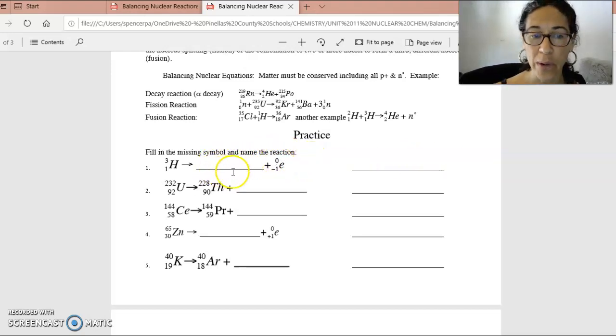Now, how do we figure out what the particle contains? It's that AXZ, three pieces that we need to fill in. So the top thing, the mass, is going to be determined from this mass, the starting mass of three, and the knowledge that the beta particle takes no mass away from it. So if no mass is lost, the new particle must weigh three atomic mass units as well. So that number will go on the top.